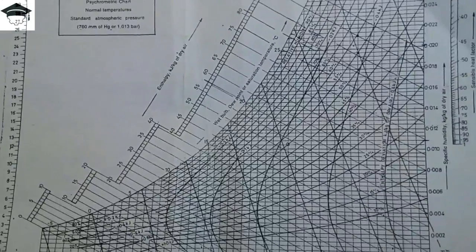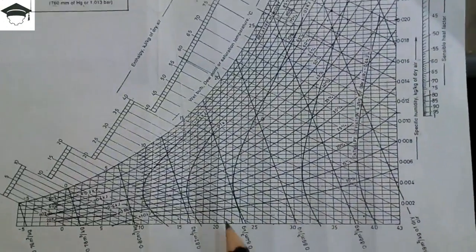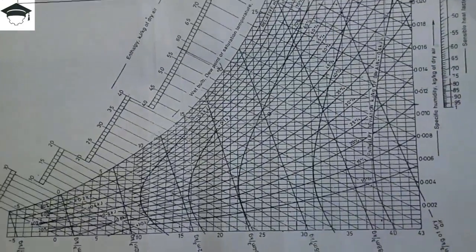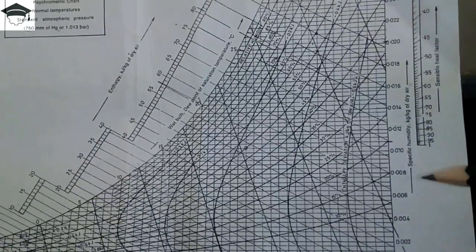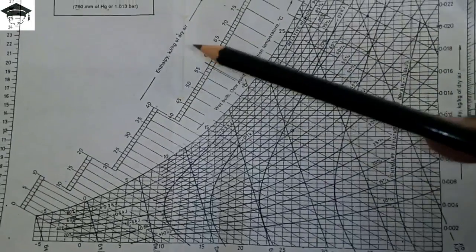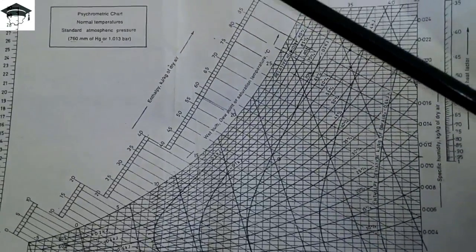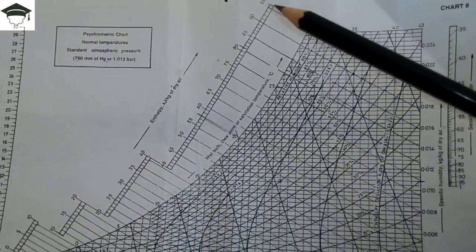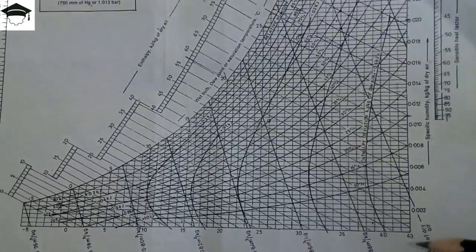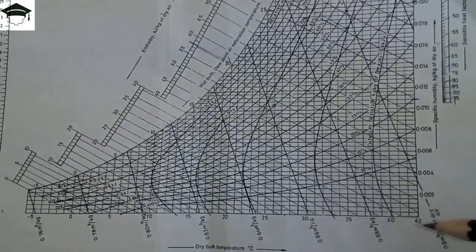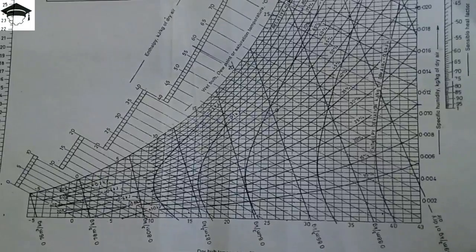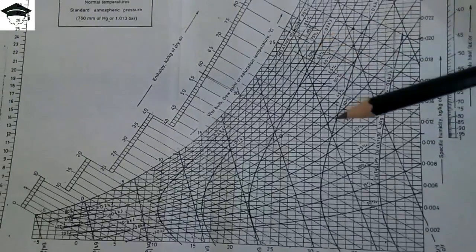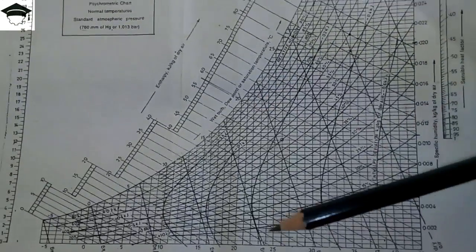This is a psychrometric chart. The dry bulb temperature is on the x-axis, specific humidity is on the y-axis, and enthalpy lines are shown ranging from 0 up to 95. The DBT ranges from minus 5 to 43 degrees Celsius. The lines with steeper slope represent specific volume in meter cube per kg.